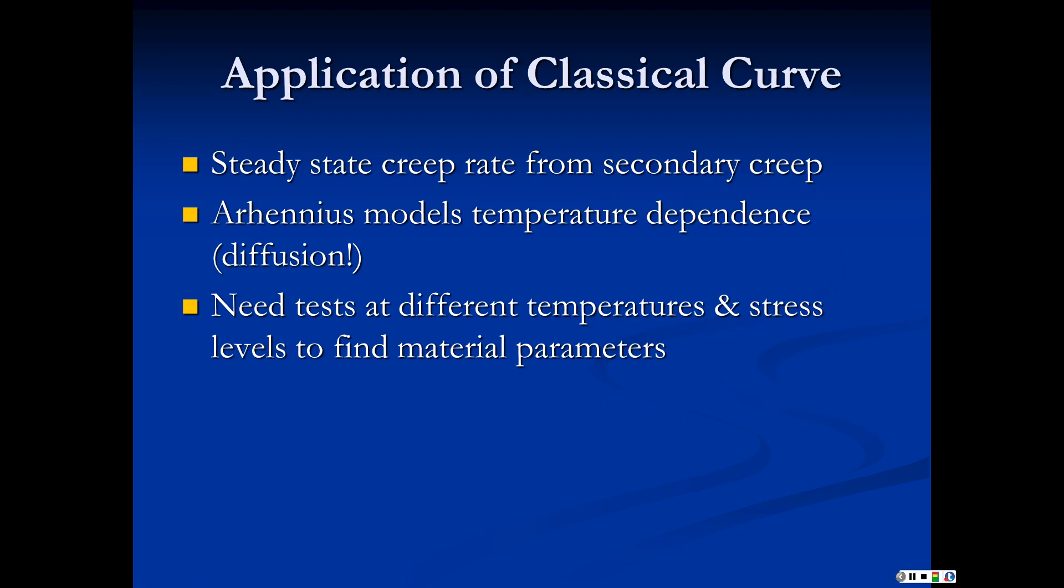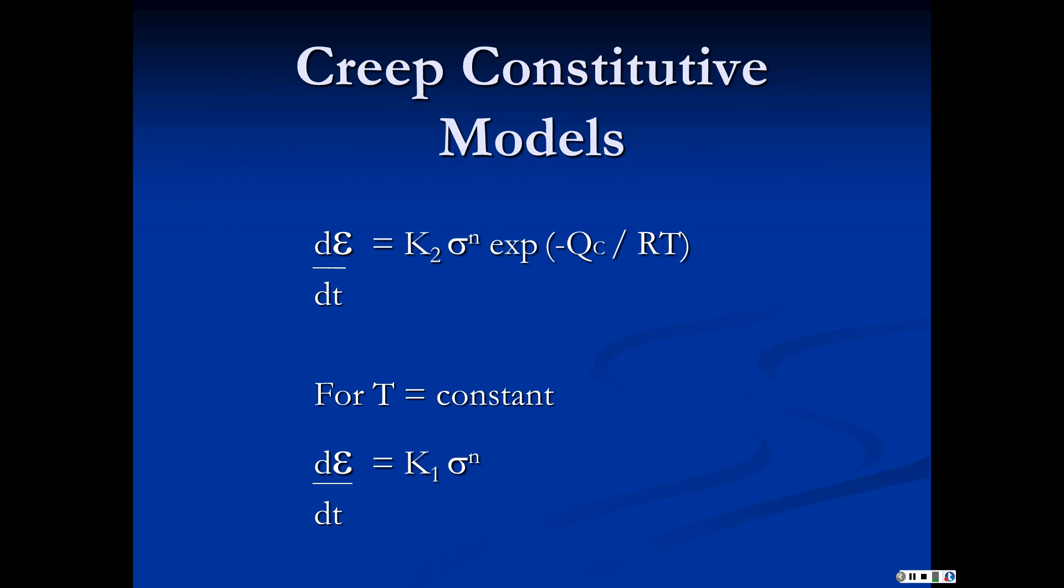Steady state creep rate comes out of that secondary creep. It turns out that the rate of creep depends on the Arrhenius model. No surprise, it's diffusion. Remember back to the number of vacancies or the diffusivity calculation - those are Arrhenius forms. What you're going to need to do to find the material parameters is tests at different temperatures and different stress levels. These are the creep constitutive models. dε/dt, the strain per time or velocity of the strain, has three material constants: k2, n, and qc.